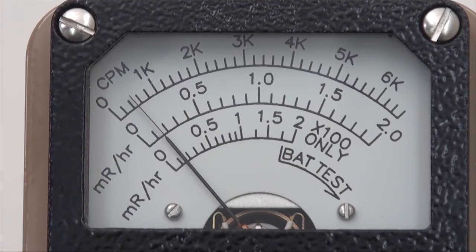In this example, we see the switch set to x10, and the needle pointing to 500 on the counts per minute scale. So the actual radiation reading is 5000 counts per minute.